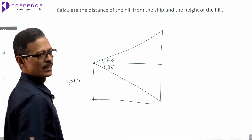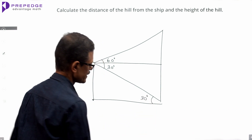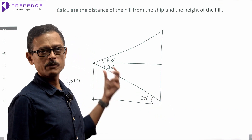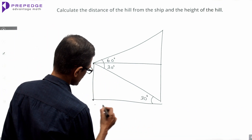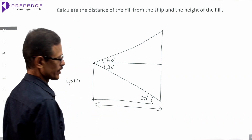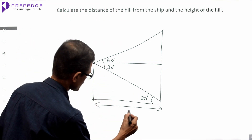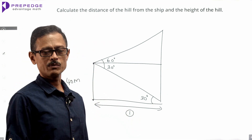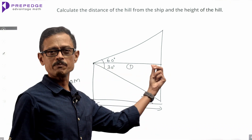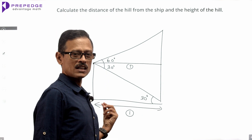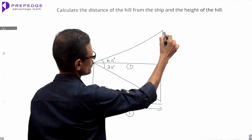The angle of elevation to the top of the hill is 60 degrees. The angle of depression to the base is 30 degrees, so correspondingly the angle of elevation from the base of the hill to the deck is 30 degrees. We need to find two things: the distance between the hill and the ship, and the height of the hill. We'll use tan θ — we know the angle and one side, so we can find the other.